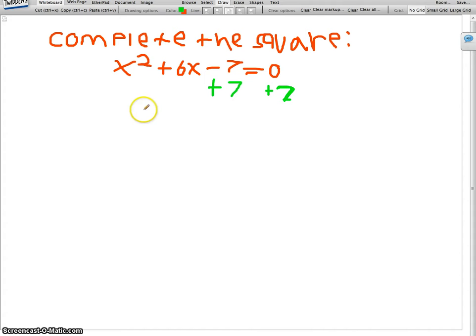Okay, and then you get x squared plus 6x, and then you put plus, and then you draw a line, since you don't know what's going to go there.